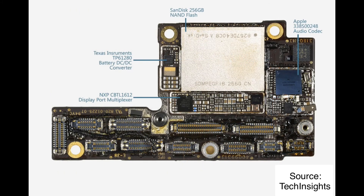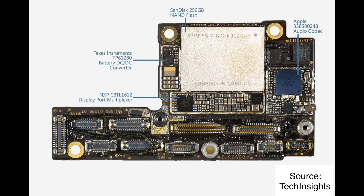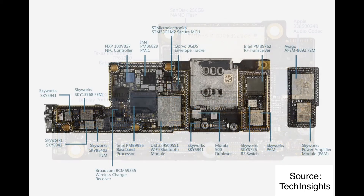The third one is NAND memory. It is also memory, but the function is a little bit different. DRAM is to provide data to the application processor, but NAND memory is to store data — for example, photos, music, or videos.